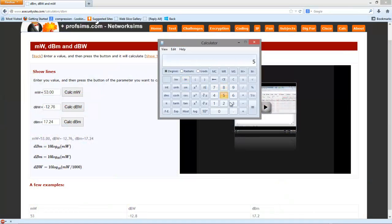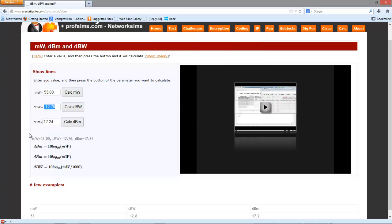So we'll take our 53 again, exponent 3 minus. This time we don't divide it by the 1 milli because we're calculating dBW. So we'll take the log of that and now we'll multiply that by 10. And then we get minus 12.76 when rounded up, which is this value here.